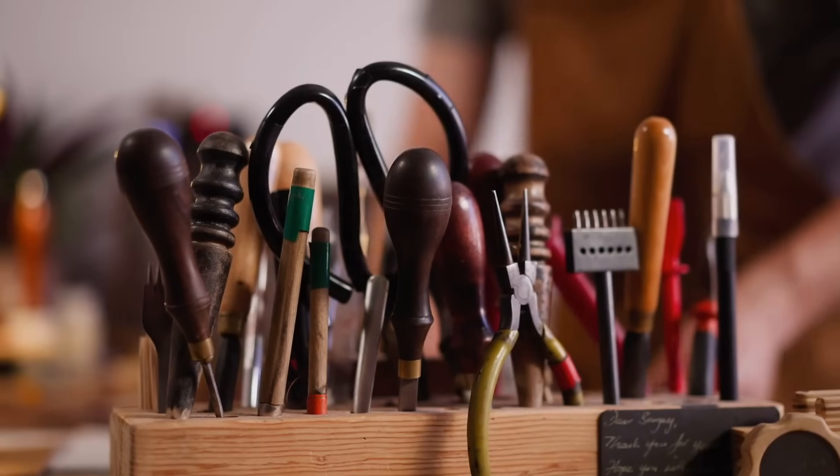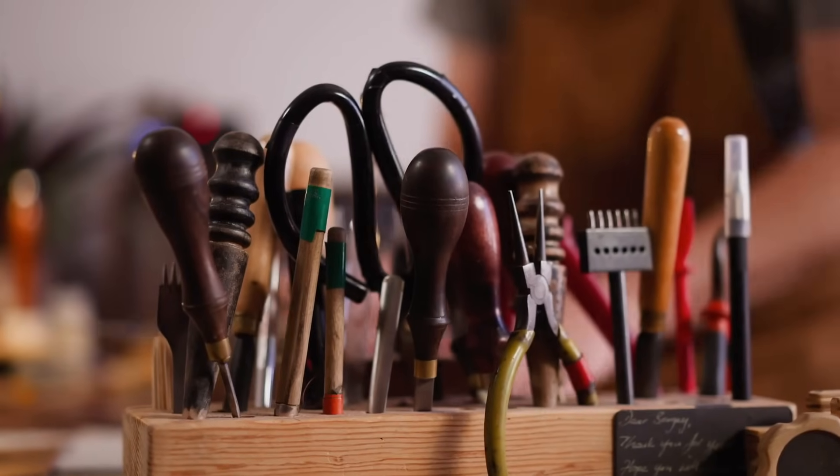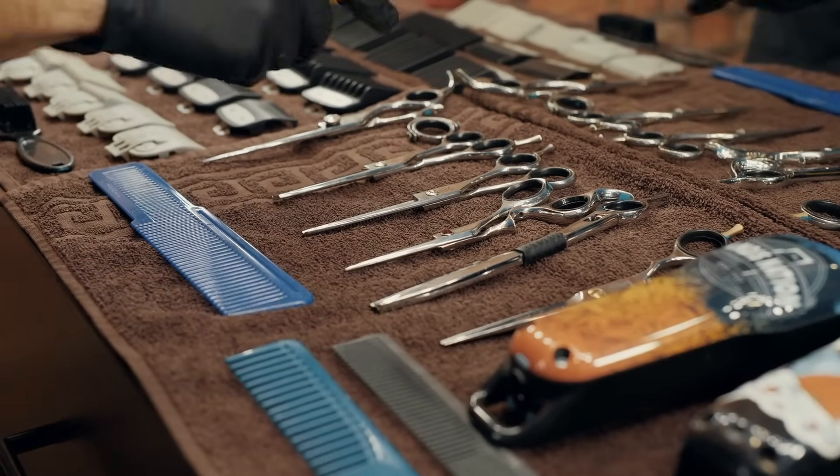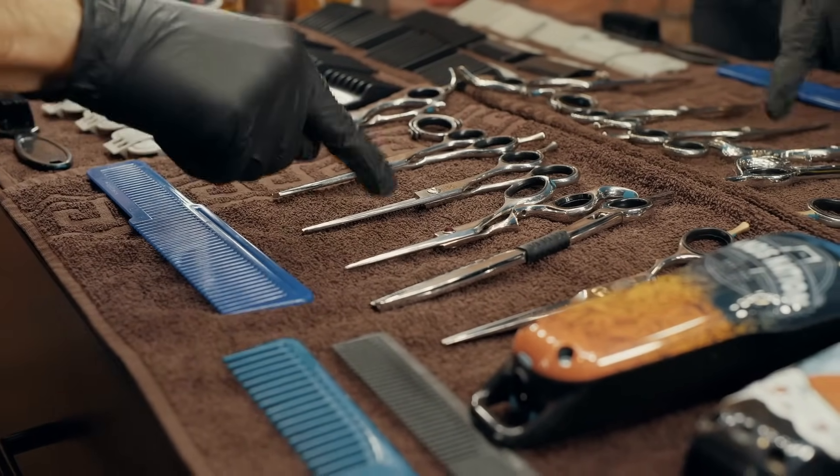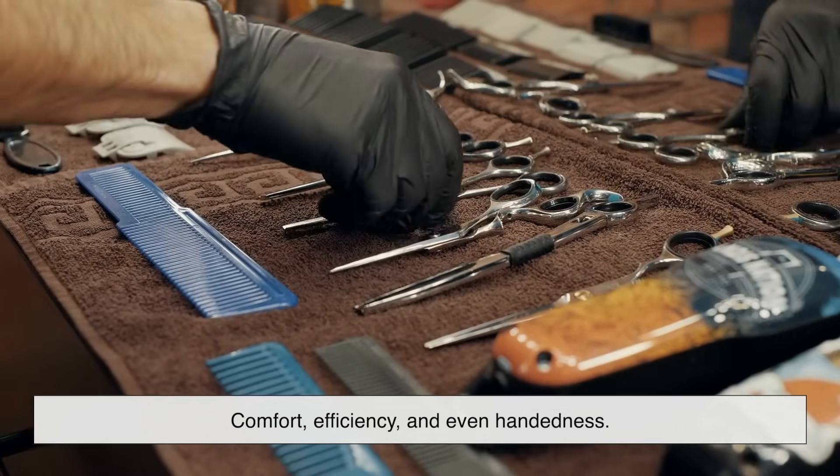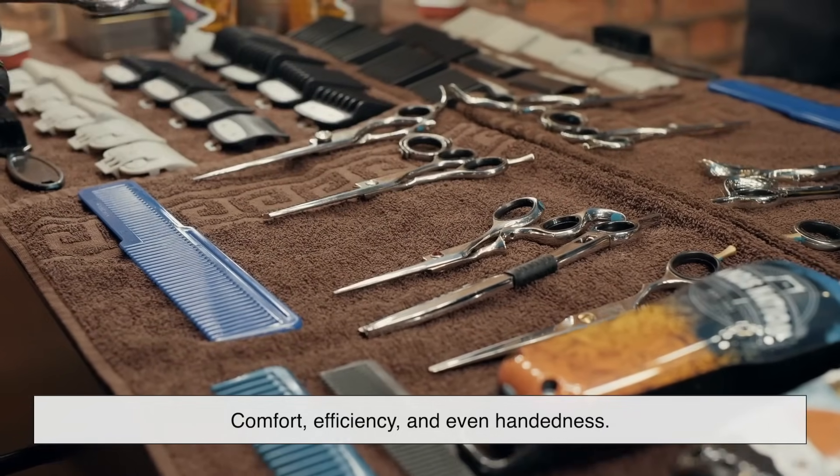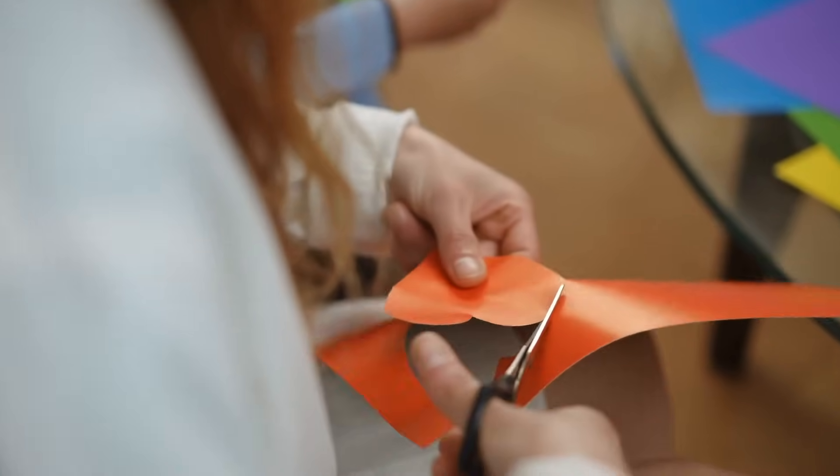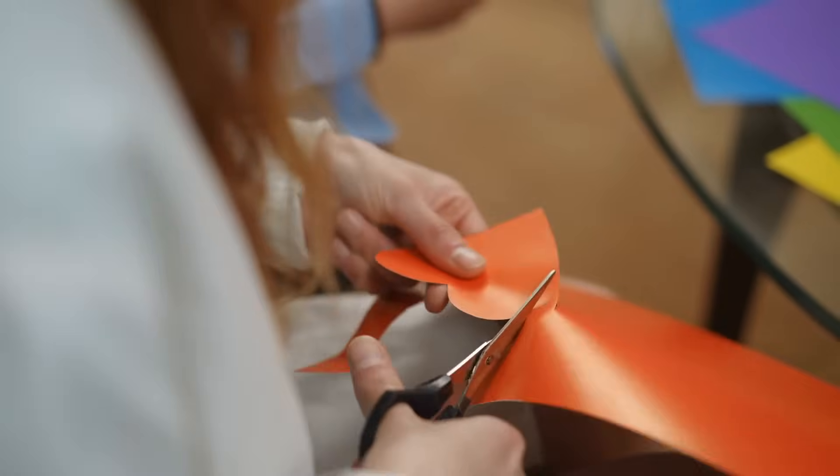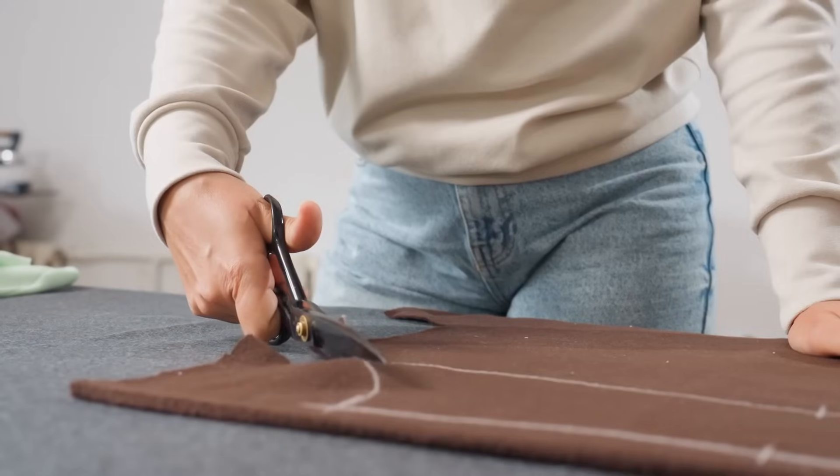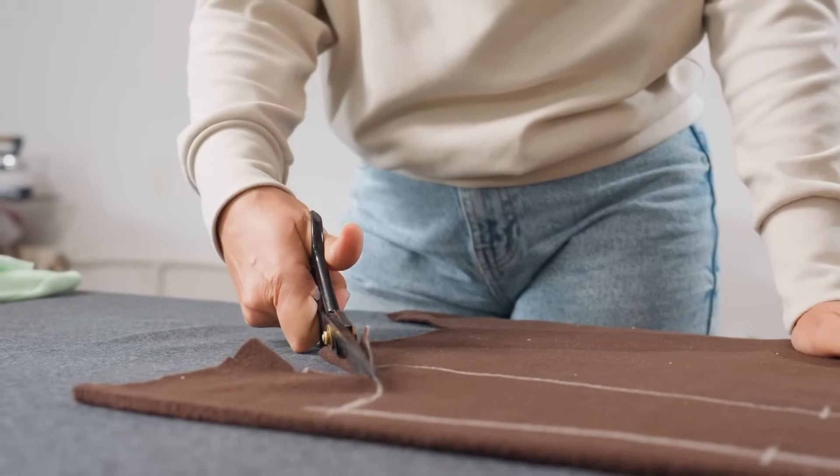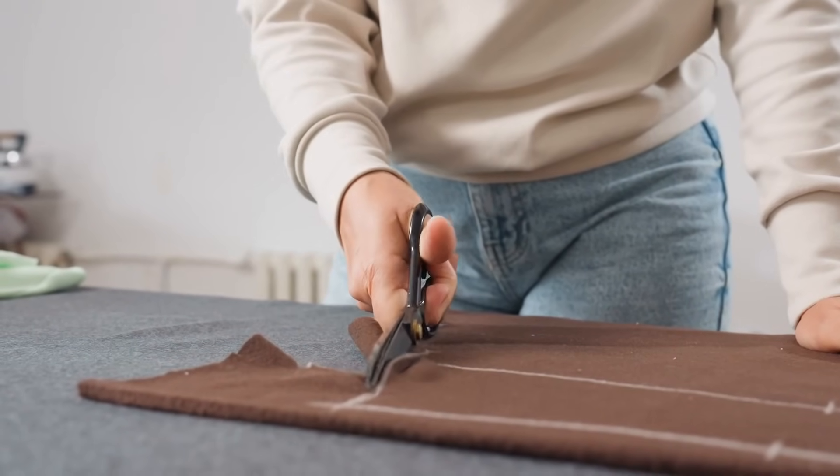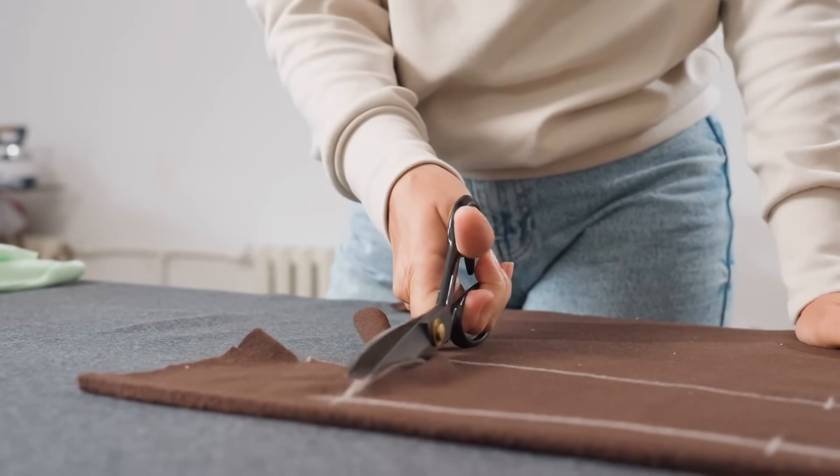It's easy to overlook the brilliance in everyday objects, especially ones as ordinary as scissors. But once you start noticing these design choices, the way they account for comfort, efficiency and even handedness, it opens your eyes to the hidden logic built into so much of the world around you. That one big handle isn't just a feature. It's a story in itself. A reminder that even the most mundane tools carry within them the weight of thoughtful craftsmanship and human experience.